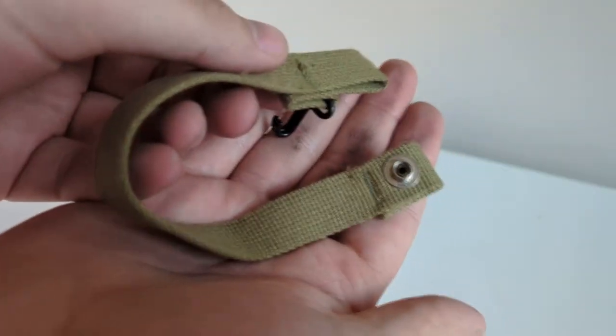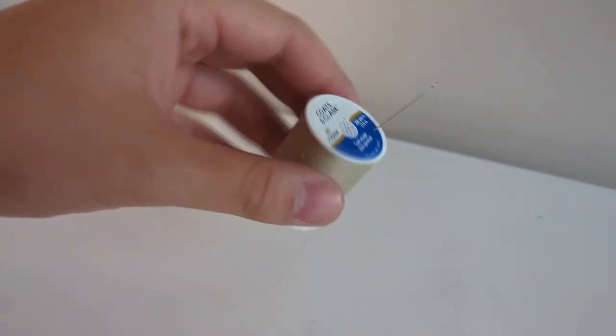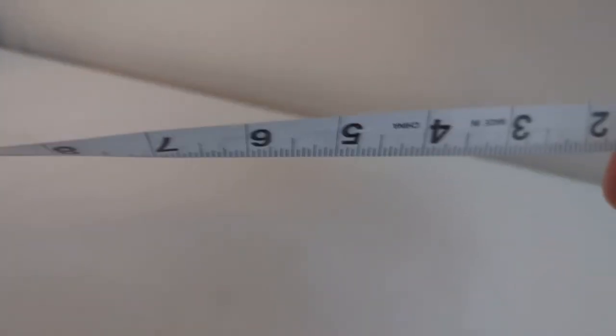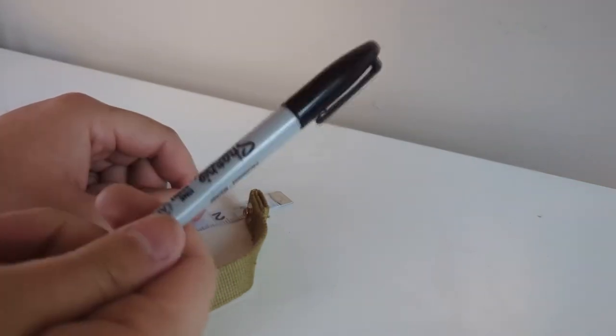What you're going to need is your chin straps. Here I have some M1C chin straps. You're going to need needle and thread. I like using lighter thread for a nice contrast. You're also going to need a couple of safety pins to help hold the chin strap in place when you're getting started, a measuring tape, and a Sharpie or some other marking device.